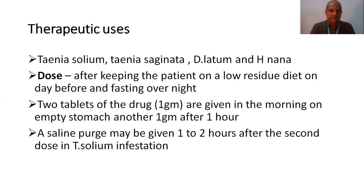The dose is very important. After keeping the patient on a low-residue diet one day before and fasting overnight, two tablets of the drug — one gram each — are given in the early morning on empty stomach, and another one gram after one hour as a second dose. After giving two doses, a saline purge may be given one to two hours after the second dose, especially in Taenia solium infestations.